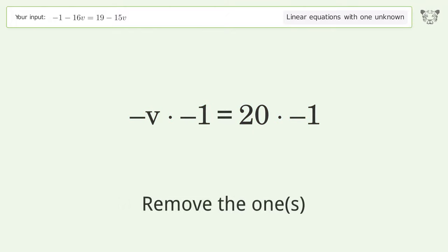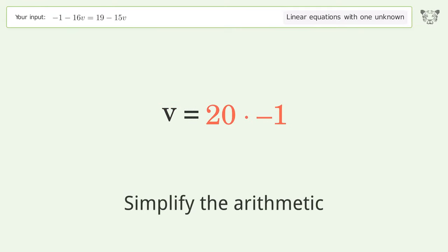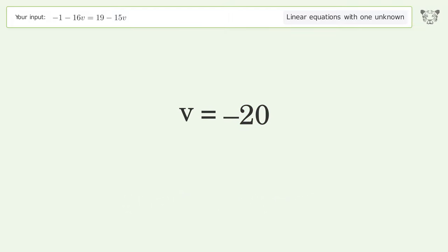Remove the 1s. Simplify the arithmetic. And so the final result is V equals negative 20.